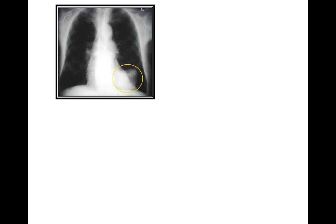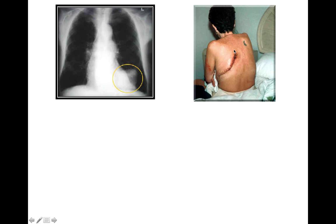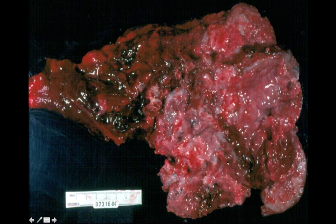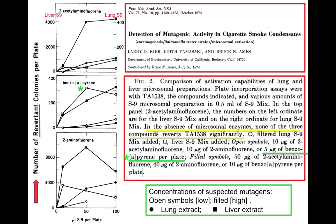This is an x-ray of a lung tumor. This is a picture of a woman who has had her lung removed because it is cancerous. And this is a cancerous lung right here — in case you can't see it, that's what it looks like.